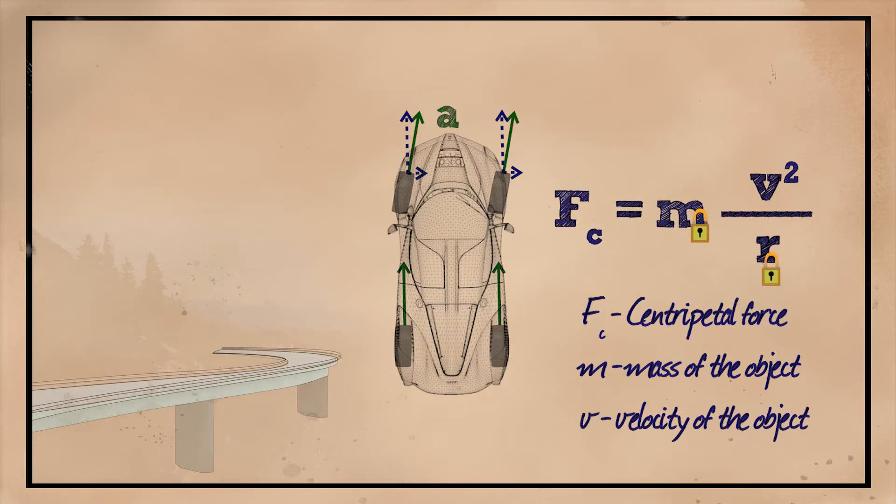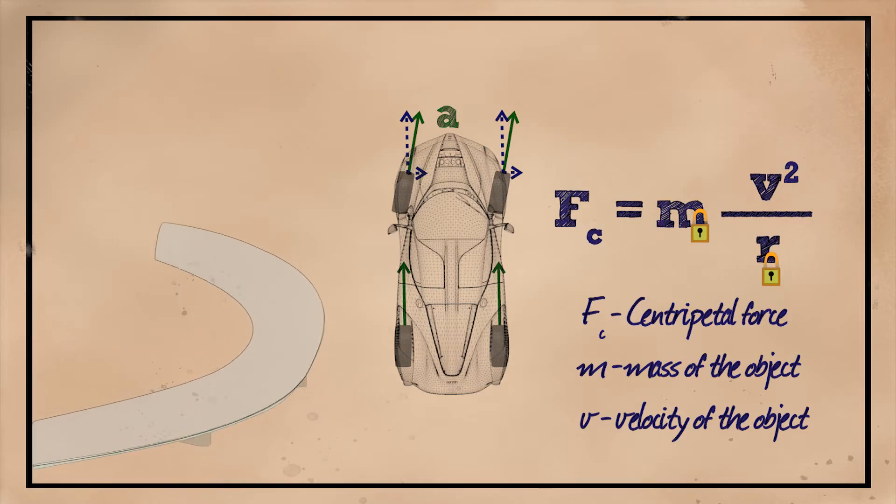Either decrease the velocity or increase the traction. The easiest way to make the curve safely would be to reduce the travel speed. A reduction in the speed would decrease the needed centripetal force, which would decrease the chances of sliding off the road. But that defeats the purpose, right? The objective is to travel faster and safe.